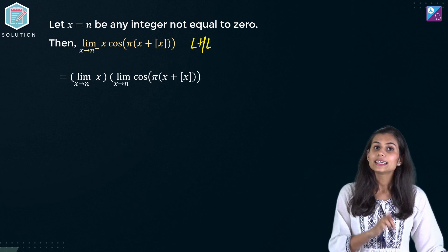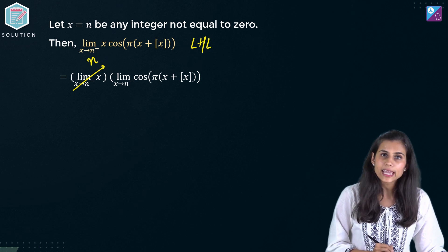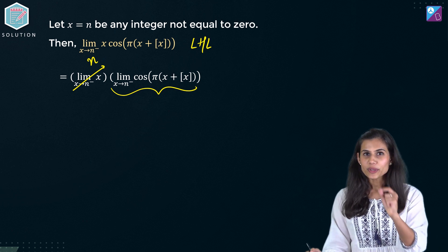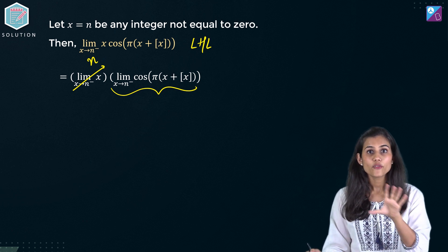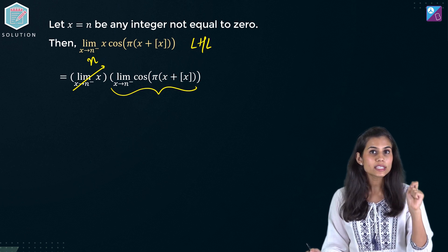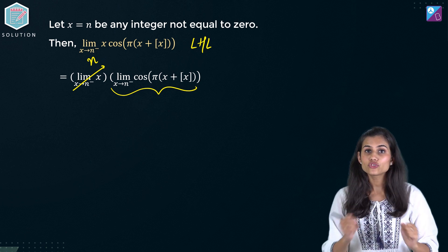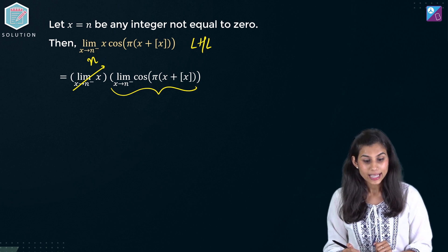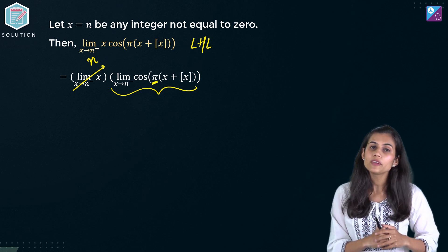Now limit of x as x approaches n will obviously come out to be n. But what about this entity? Let's tackle it. We know that when f is continuous limit of f is f of limit. Here cosine function is continuous. Right? So limit and cos will interchange their positions. Limit will go inside cos. And pi you can see is a scalar quantity. So it will come out of limit again.